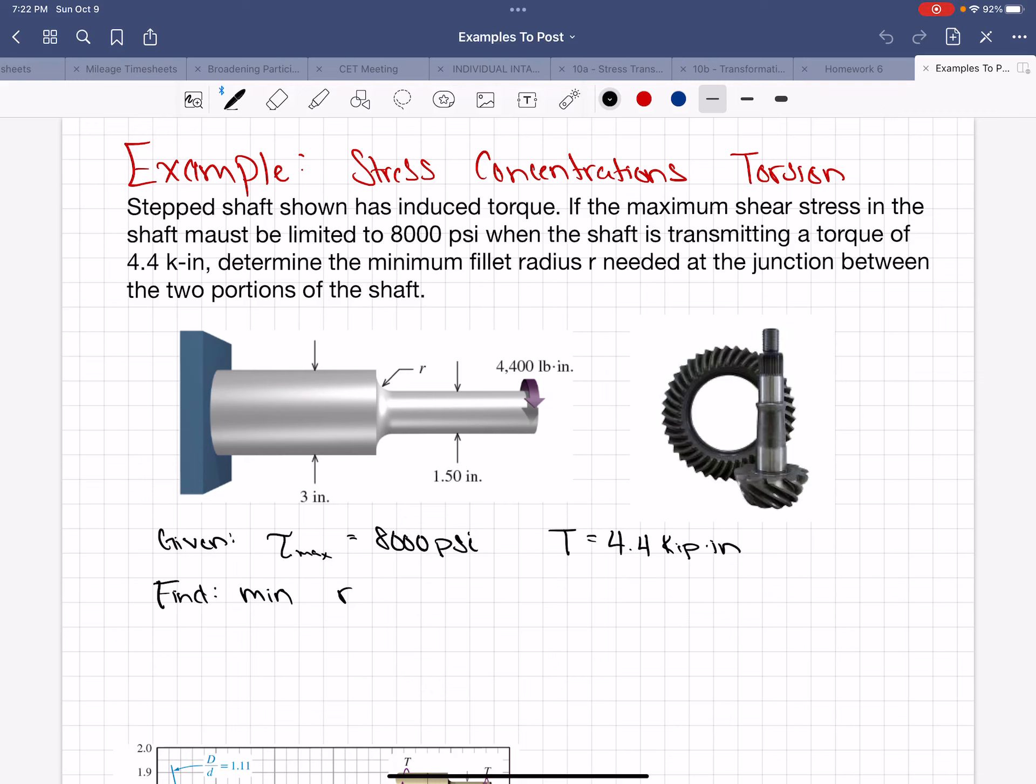Okay, now we should have sound and everything, and we'll do this example of stress concentrations when we're looking at torsion. So we have a stepped shaft with an induced torque. The maximum shear stress in the shaft is limited to 8,000 psi, so this really is our tau max.